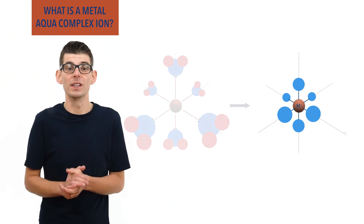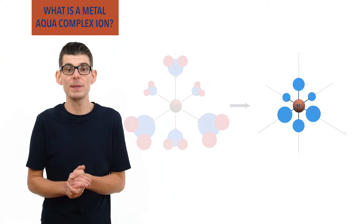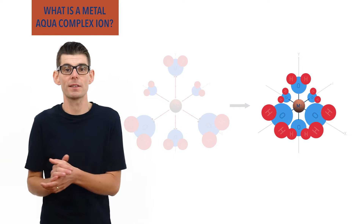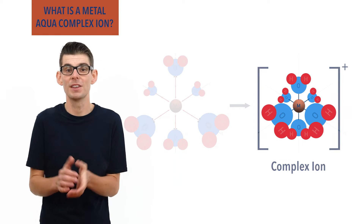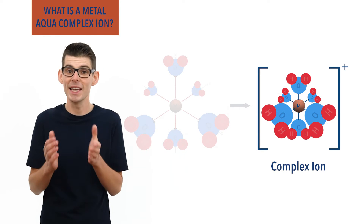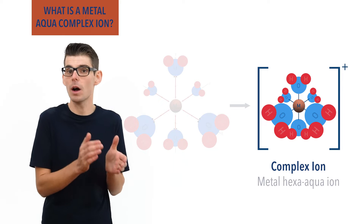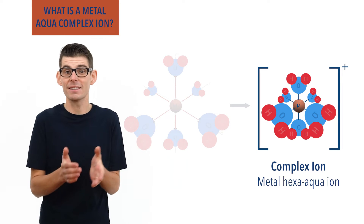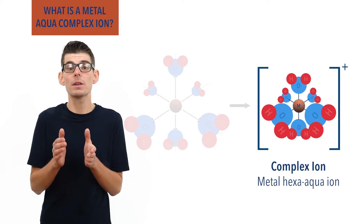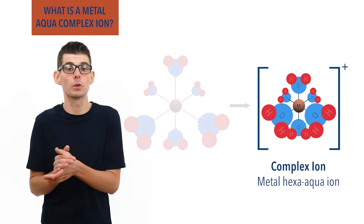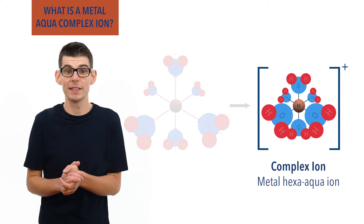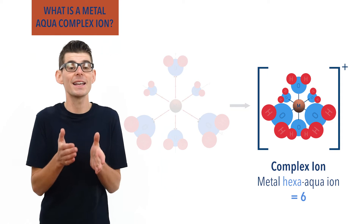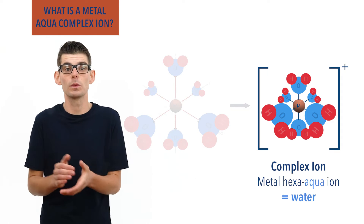This forms a large single species that is called a complex ion. Specifically, it's a metal hexa-aqua ion complex. Hexa-aqua because there are six water molecules in it — hex for six and aqua for water.